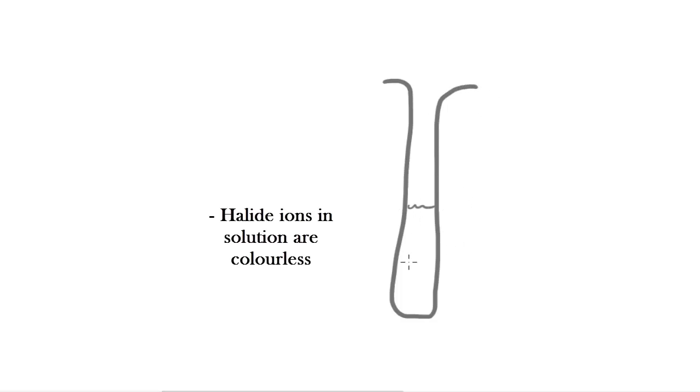In this video I'm going to be talking about the silver nitrate test, which you can use to identify unknown halides in a solution. So maybe if you had a test tube with some sort of halide solution in there, you could use the silver nitrate test to identify what the halide is.